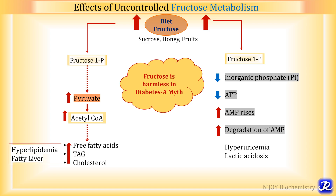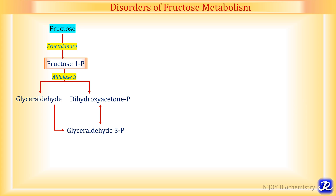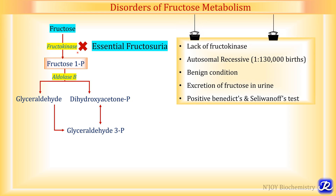There are two important enzymes in fructose metabolism: fructokinase and aldolase B. Fructokinase is responsible for phosphorylation of fructose to fructose 1-phosphate. If this enzyme is defective, the condition is called essential fructosuria. Essential fructosuria is due to lack of fructokinase; it is an autosomal recessive condition occurring in 1 in 130,000 births. It is a benign condition that does not result in any abnormality — the only finding is excretion of fructose in urine, detectable by Benedict's test and Seliwanoff's test.